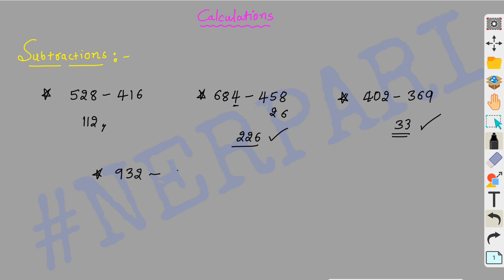Next: 932 minus 605. So 900 minus 600 is 300. Then 32 minus 5 is 27. So the unit digit is 2, then 5, giving us 27. So 300 plus 27 is 327. Simple, okay.